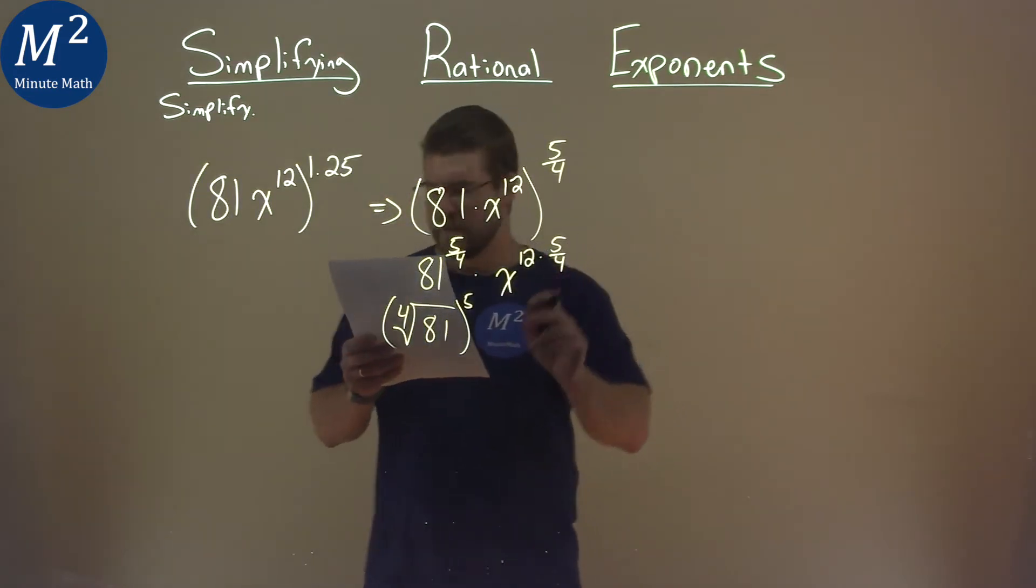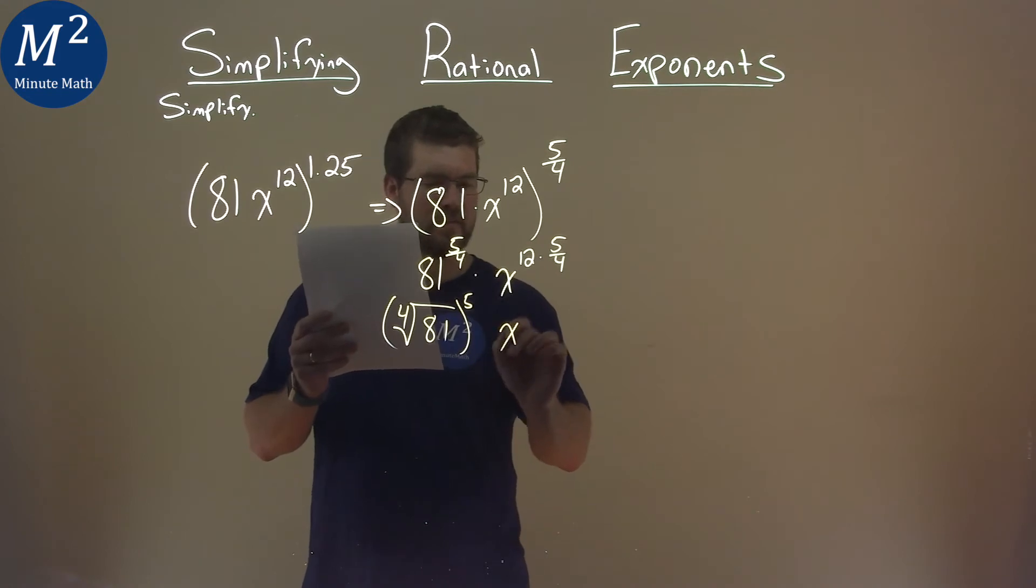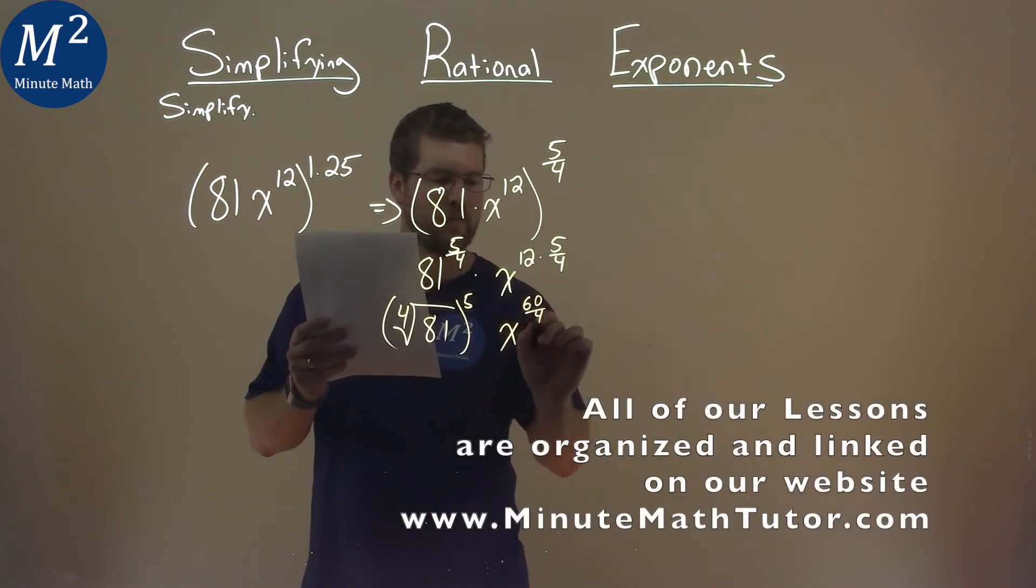Well, 12 times 5, we're multiplying this out here. So 12 times 5 is 60, so we have x to the 60th power over 4.